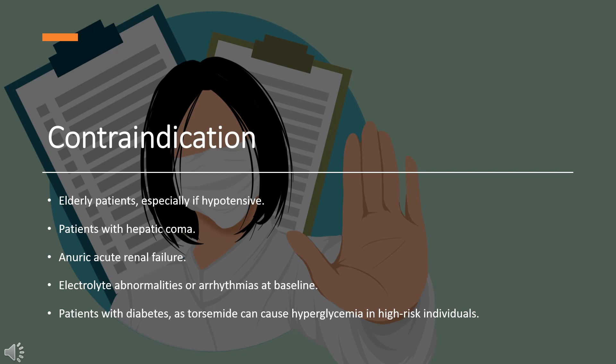Contraindications: Torsemide is contraindicated for elderly patients, especially if hypotensive; patients with hepatic coma; anuric acute renal failure; electrolyte abnormalities or arrhythmias at baseline; and patients with diabetes, as torsemide can cause hyperglycemia in high-risk individuals.